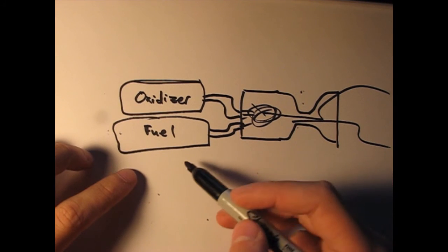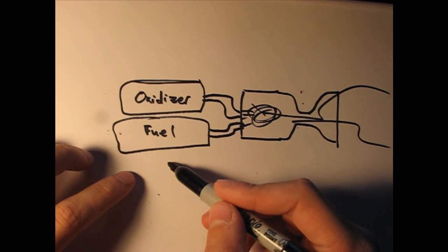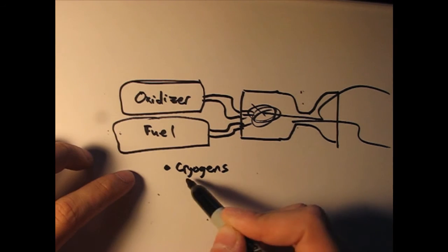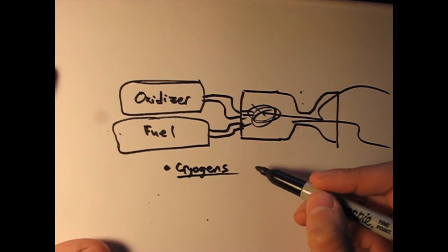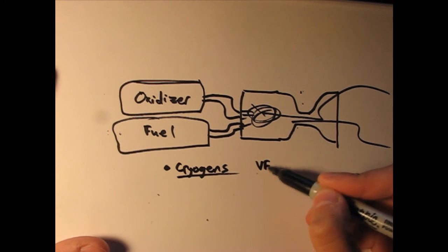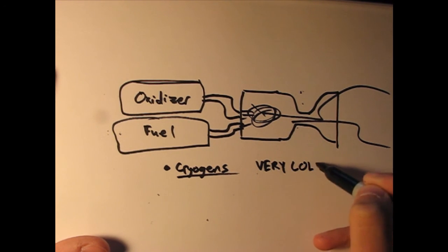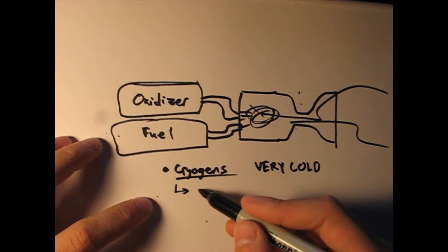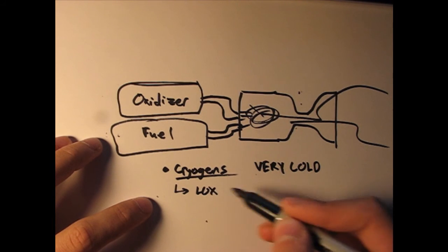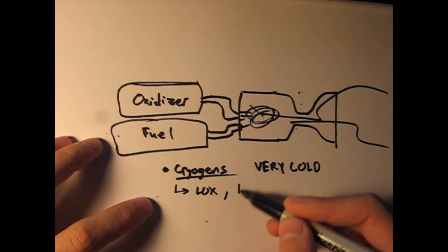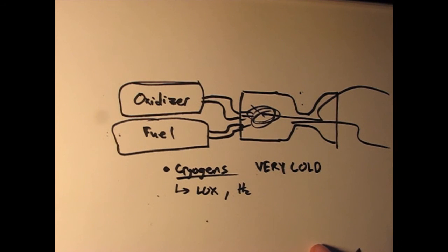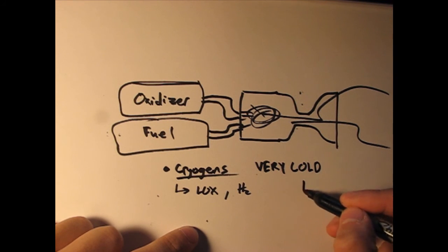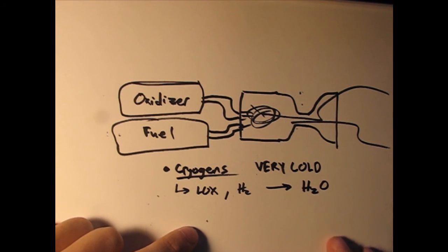My battery died for a moment there, but we're back in business. So propellants for liquid fuel, they're typically, they're usually cryogens, which means they're super cooled. Very cold. The most common you see is typically liquid oxygen and liquid hydrogen. Those are very nice because they combine and form water, which is very nice.